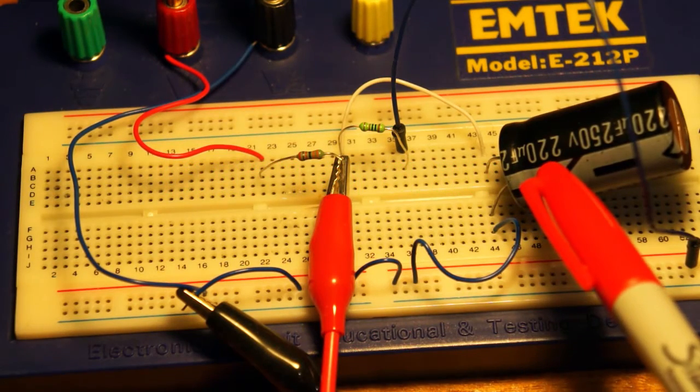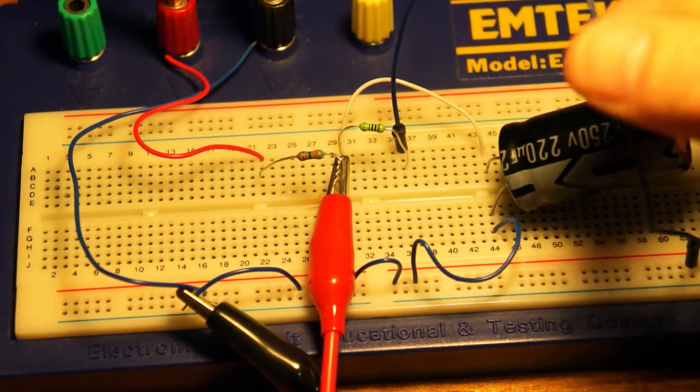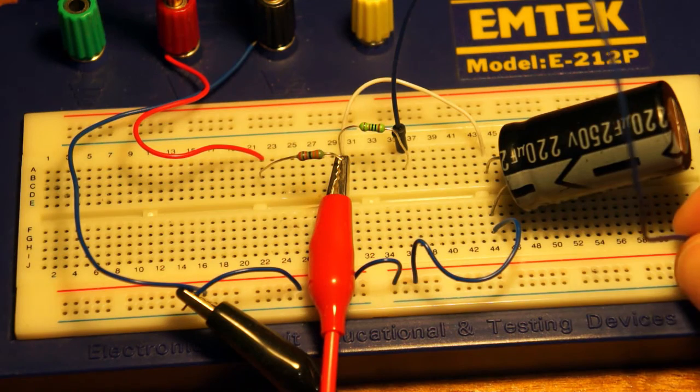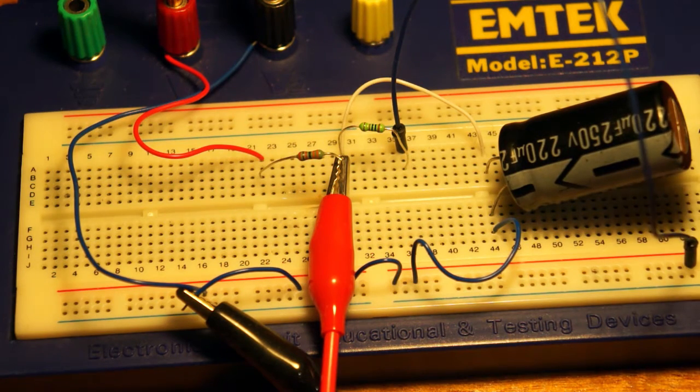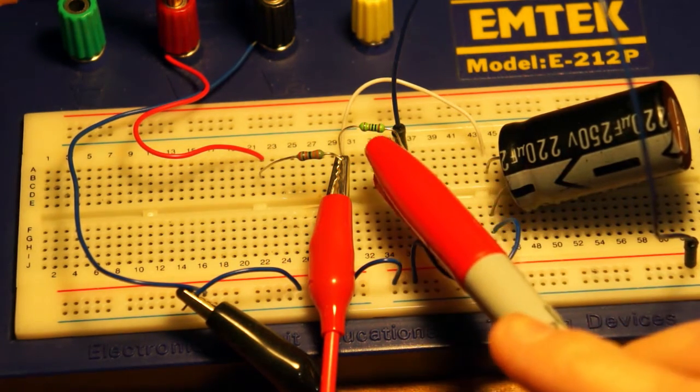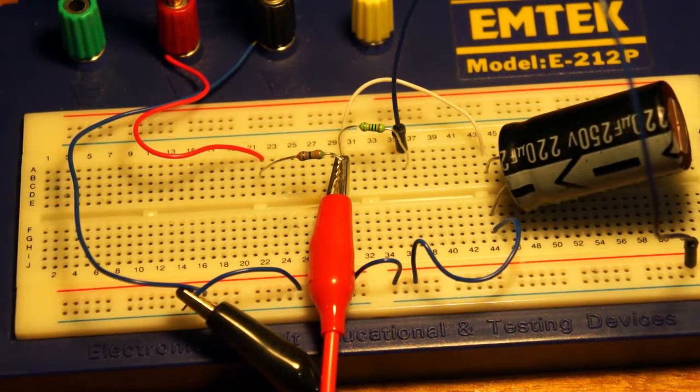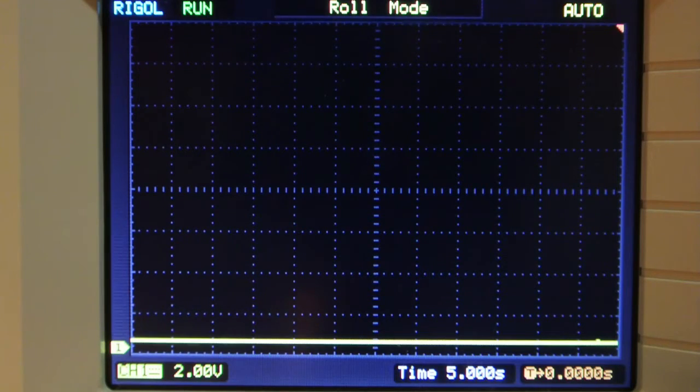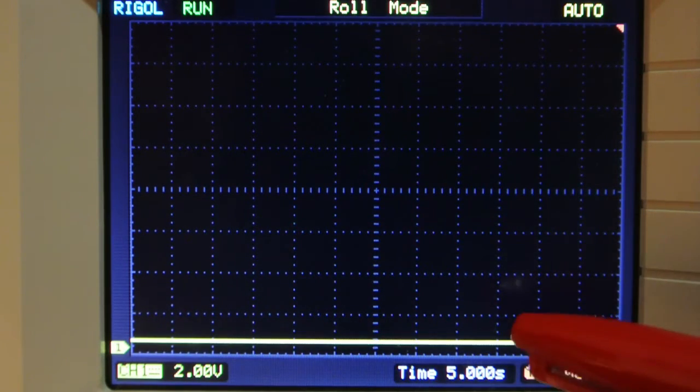There's my 220 microfarad capacitor. I have a small wire here. And at the moment I have the capacitor going through the 1k resistor to ground. Hence we've got just 474 millivolts on the screen of the oscilloscope.